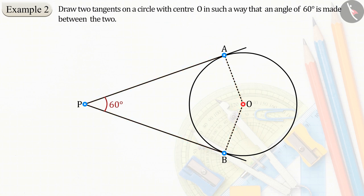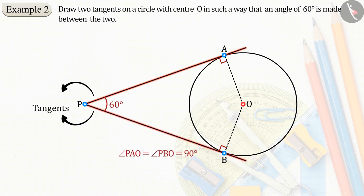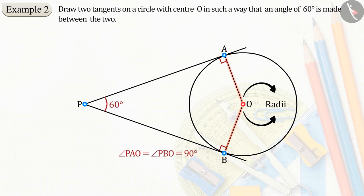in which the angle APB is 60 degrees and angles PAO and PBO are right angles. Because PA and PB are tangent lines and OA and OB are the radii of the circle.